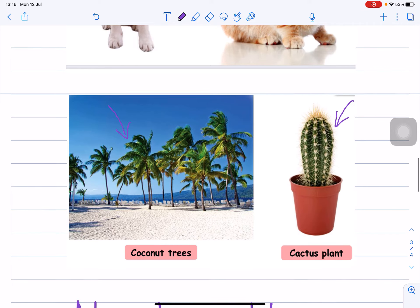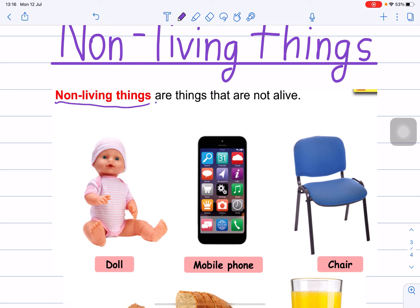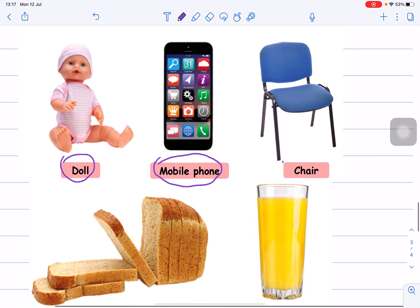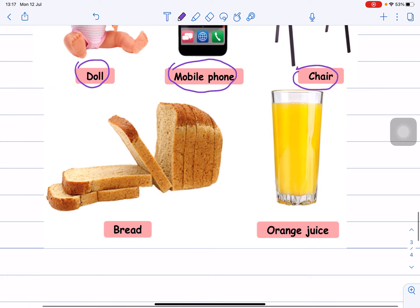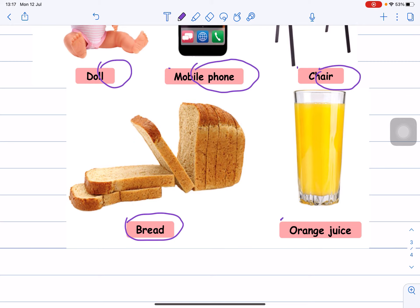Now let's move on. Non-living things. Non-living things are things that are not alive. So you have a doll — non-living thing. Mobile phone, like iPhone — non-living things. A chair is a non-living thing. Food like bread — bread is a non-living thing. And lastly, orange juice — orange juice is a non-living thing.